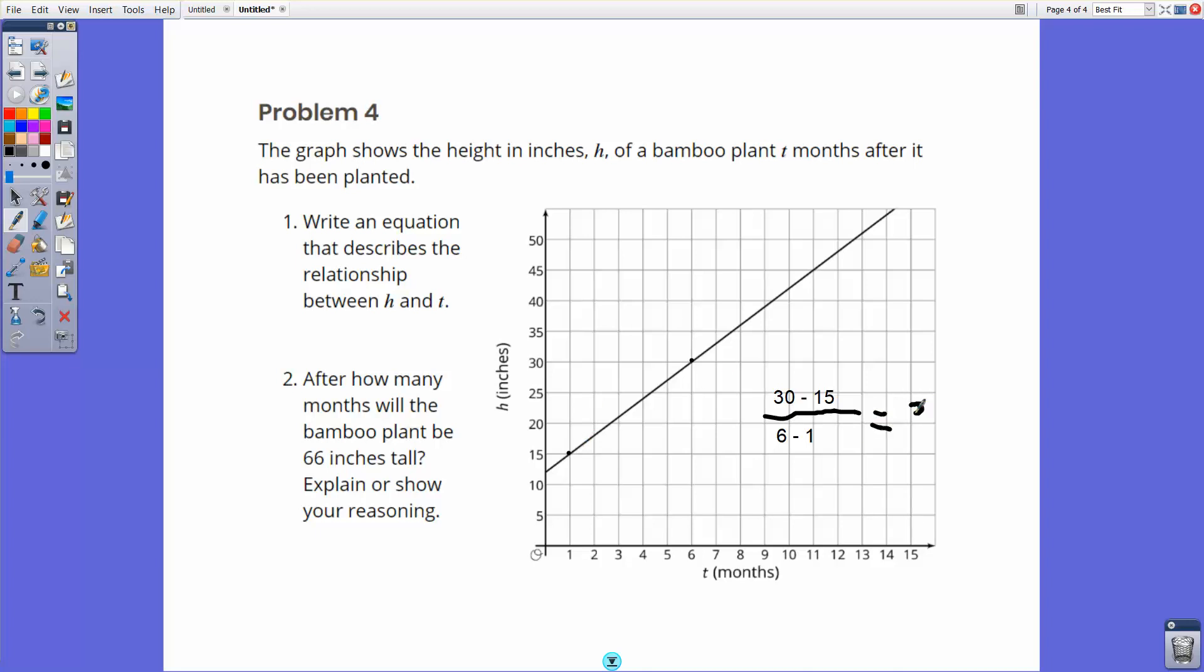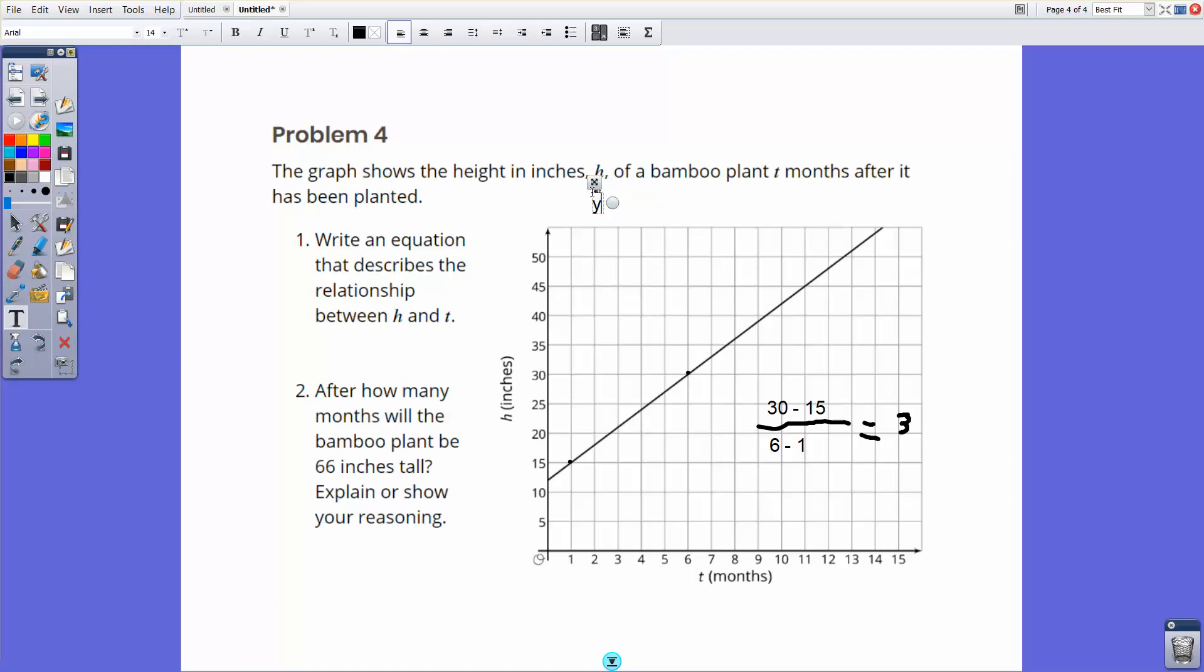Now, if that's the slope, the y-intercept is 12. So that right there should be enough information for you to write the equation in the format of y equals mx plus b. I already mentioned both the m and the b. So your job is to take what you heard and put it into this format. Put your m for your slope and your b for your y-intercept.